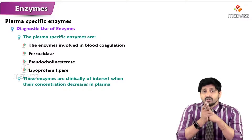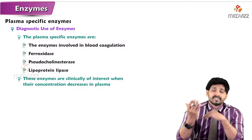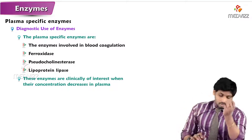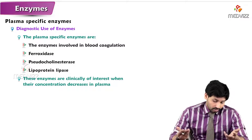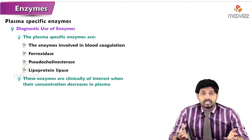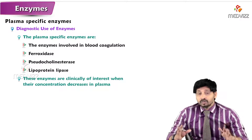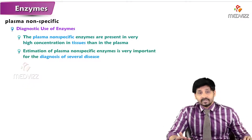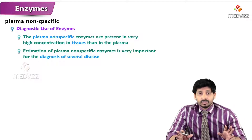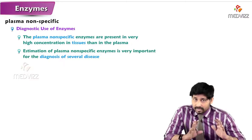If plasma non-specific enzyme concentrations are higher in plasma, it indicates some disorder. So both enzyme types work in opposite directions. Plasma specific examples include enzymes involved in blood coagulation, pseudocholinesterase, and lipoprotein lipase for digestion of lipids like triglycerides. Plasma non-specific enzymes are present in very high concentrations in tissues, and their estimation is important for diagnosis of several diseases.